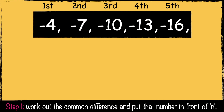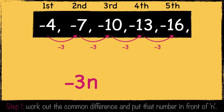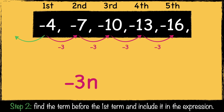Here's another sequence: minus 4, minus 7, minus 10, minus 13, and minus 16. First, we need to work out the common difference. In this sequence, we're subtracting 3 from each number, so the first part of this expression is minus 3n. As this sequence is subtracting 3 each time, we need to add 3 to find the previous term. So minus 4 add 3 is minus 1. So the nth term expression for this sequence is minus 3n take away 1.